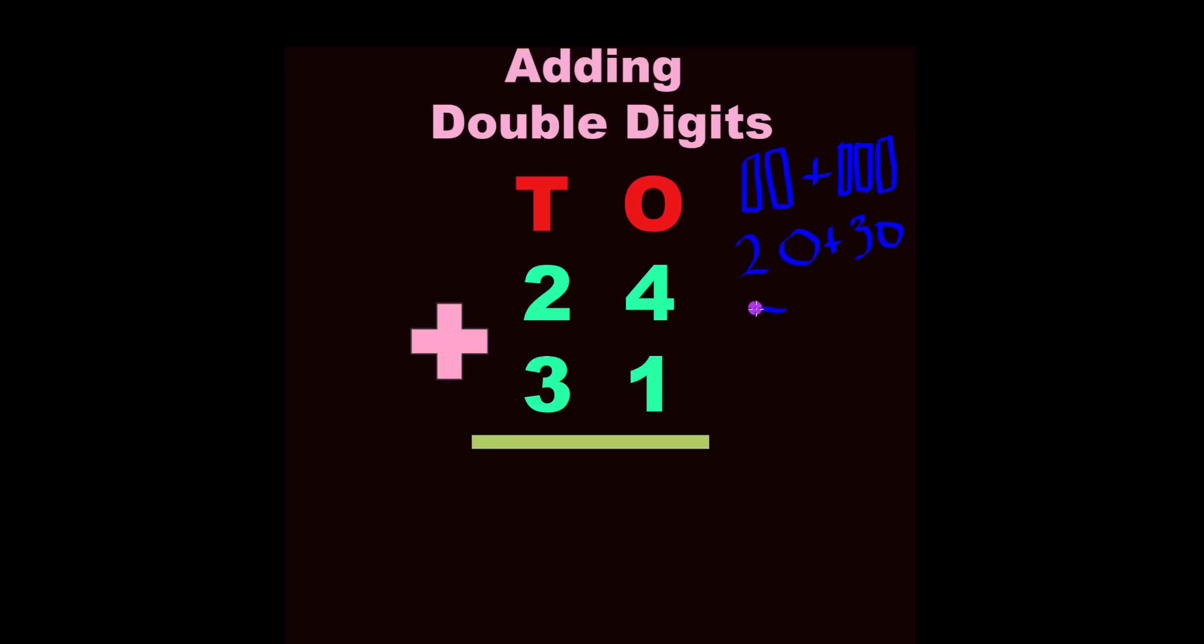So we know that this is going to be 50. This problem is going to be 50 something. So now let's write 50 and let's put a line here, and we're going to bring down that plus because now we know what the tens equal.